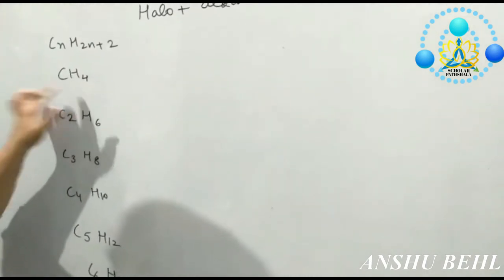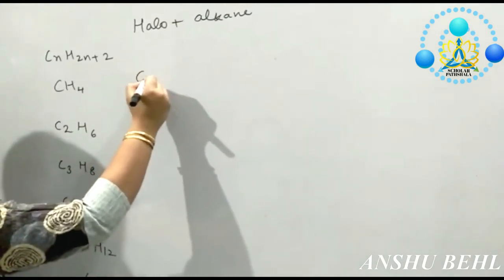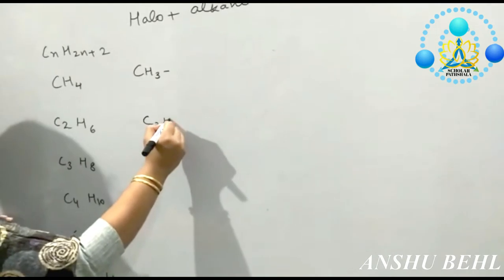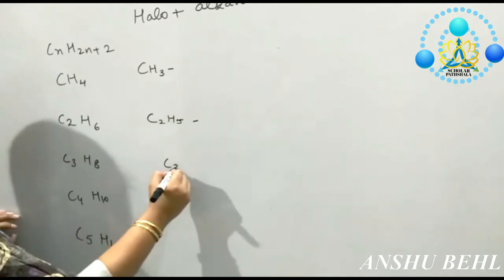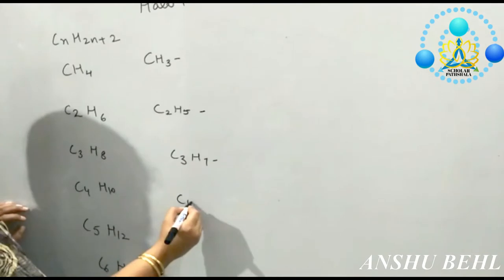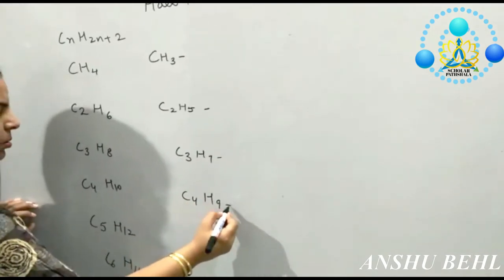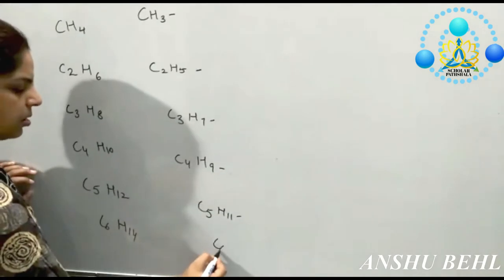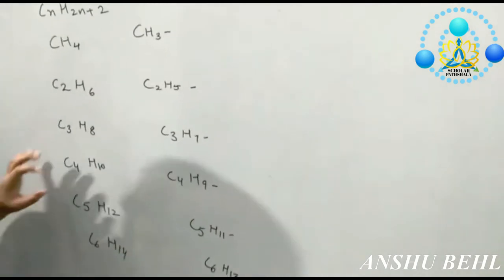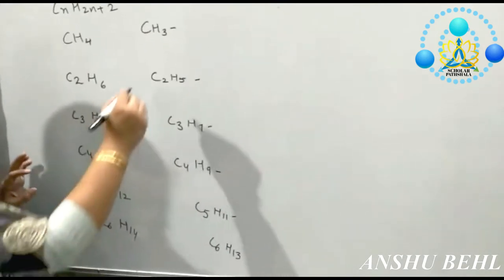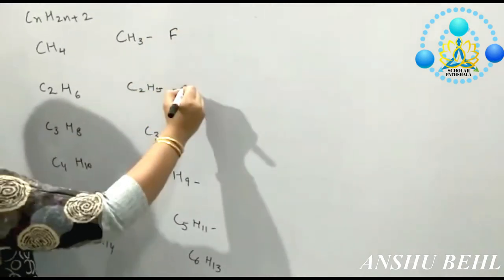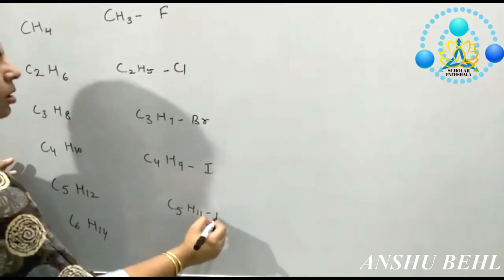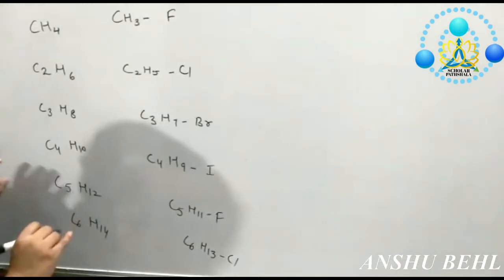What we have to do now is eliminate one of the hydrogen atoms. You have to write it as methyl, ethyl, propyl, butyl, pentyl, hexyl. Now you can write any halogen with it — it can be fluorine, chlorine, bromine, or iodine. Any halogen you can write with them. This is how to write haloalkanes.